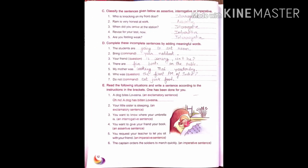Now it's homework time. Page number 12, E part: read the following situations and write a sentence according to the instructions in the bracket. One has been done for you. You have to read the sentences and then change them according to the instruction given in the bracket. For example, 'A dog bites Laveena' — the instruction says exclamatory sentence — so we can write, 'Oh no, a dog has bitten Laveena!'